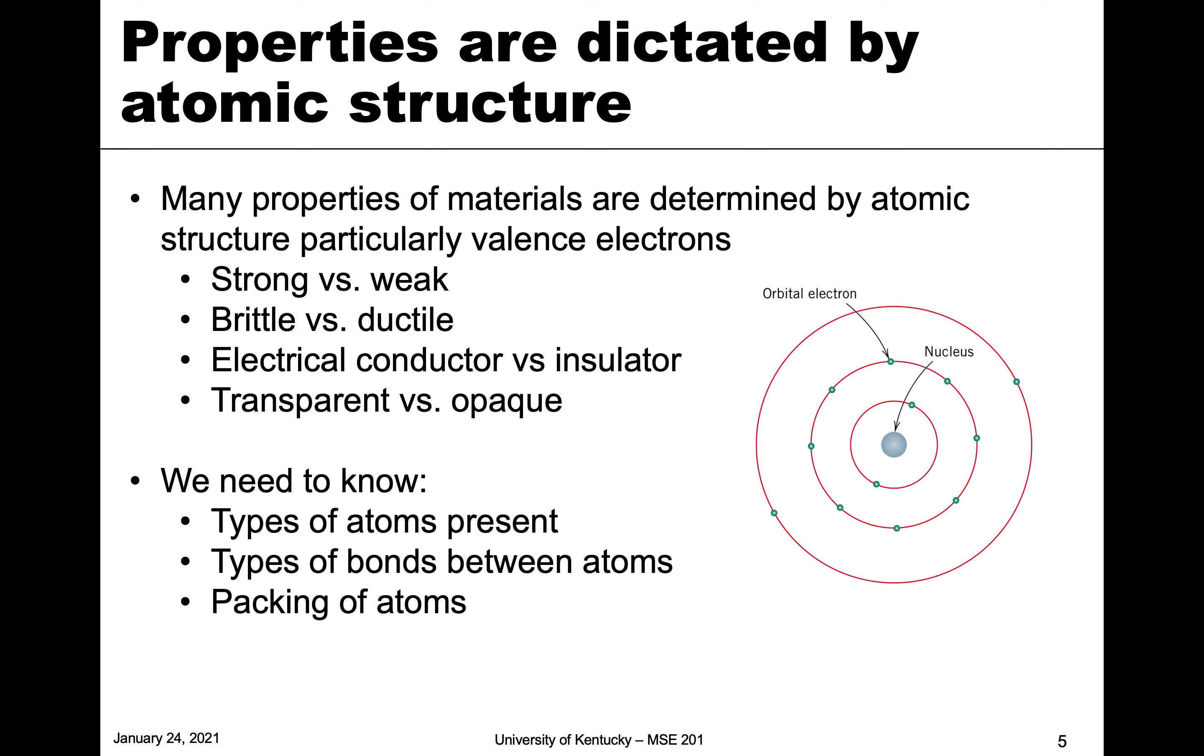We need to know the types of atoms that are present—do we have copper, carbon, what types of atoms? We also need to know the types of bonds between those atoms, and in the next section we'll talk about the packing of those atoms, which will still come back to this atomic structure.